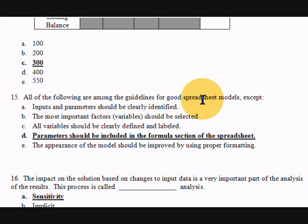We have all of the following are among the guidelines for good spreadsheet models except. Of course, we want to identify our parameters. We want to select the most important things, leave out the stuff that doesn't really matter. Everything should be clearly labeled. And we want to make sure that our parameters are not in the formulas sections of the spreadsheet. Remember our parameters or our assumptions, we want to have those in a separate area. We don't want to build in numbers inside our formulas that are likely to change. We want to put references to those things in the formulas. And of course, we want to have the model look good and make sure we use proper formatting.